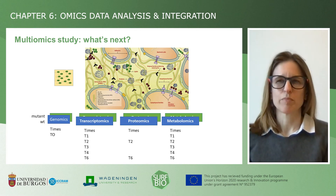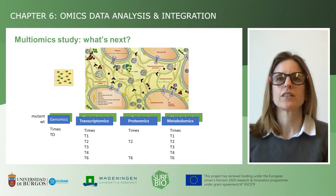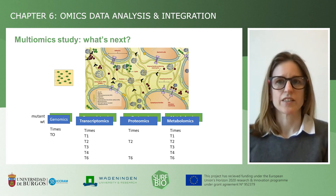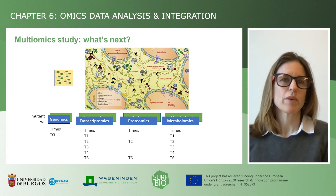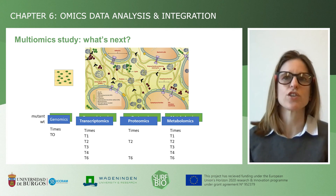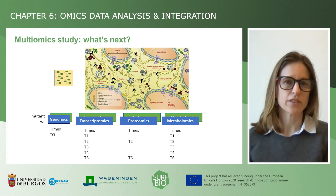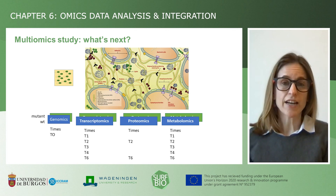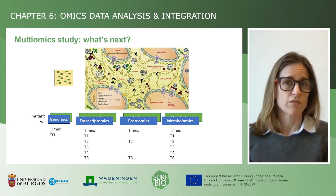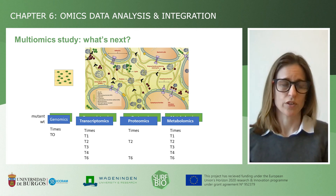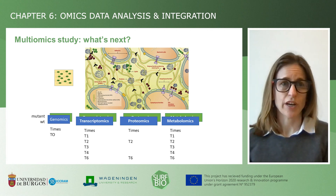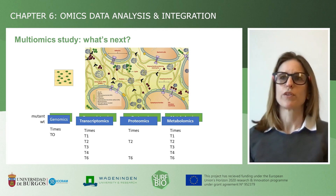Let's consider you're involved in a project studying bacteria growing in a biofilm, as we did in the FAIR data management video. You'd like to dissect the development of this community via multiple omics approaches. You collect genomics information, then transcriptomics at different time points, then you analyze some key time point samples via proteomics, and finally you record metabolomics information for all samples. You do this analysis for both a wild type and a mutant strain, as indicated by the blue and green labels.